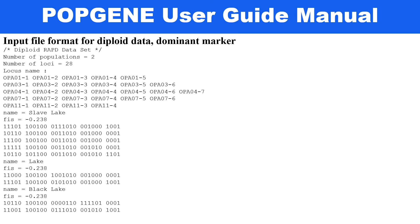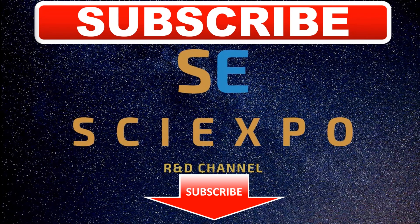For the diploid dominant marker input file format — such as RAPD data — the data input is in binary one-zero format. Data is arranged in 1/0 format, and you need to give a name to each population in the space provided on the corresponding lines. Save this as a text file in Popgene.